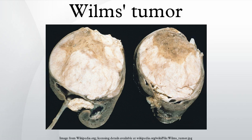Pathologically, a triphasic nephroblastoma comprises three elements: blastema, mesenchyme, and epithelium. Wilms Tumor is a malignant tumor containing metanephric blastema, stromal and epithelial derivatives. Characteristic is the presence of abortive tubules and glomeruli surrounded by a spindled cell stroma.